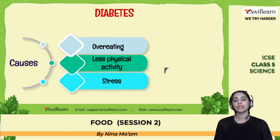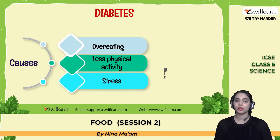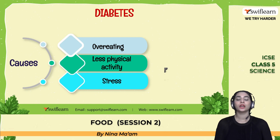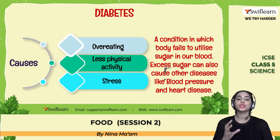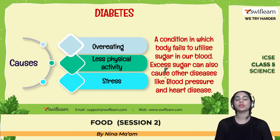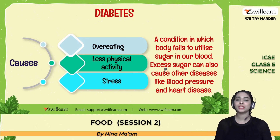Diabetes is caused by overeating, less physical activity, stress, and also hereditary factors. It is a condition in which the body fails to utilize sugar in the blood. Excess sugar can also cause other diseases like high blood pressure and heart disease. If you or someone has diabetes, it is important to control sugar intake.